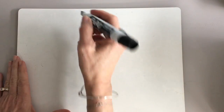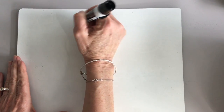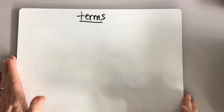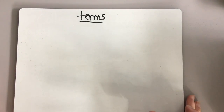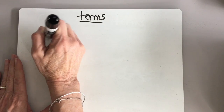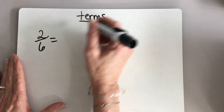This lesson is one of our most probably kind of confusing, maybe challenging lessons, but it's also so much fun too. So we talk about terms here — that is one of the big words that you're going to hear repeated so much today. And you've heard it actually before. For example, if we had the fraction 2 sixths, we reduce it to lowest terms.